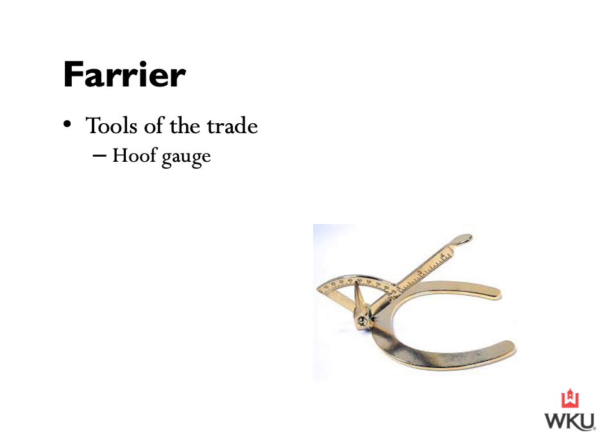Our final tool for farriery is a hoof gauge. Some farriers will use a specialized gauge to measure the hoof angles and check the balance of the hoof. This is a relatively new item in the farrier's toolkit, and some farriers prefer to use their eyes and expertise when determining hoof angles and balance. The hoof gauge gives a more precise and objective measurement and can be used to assure that the left and right sides of the horse have similar hoof angles. This will conclude our portion of the lecture on farriery and will be a good basis of understanding to follow along with Danny's demonstration on Wednesday.